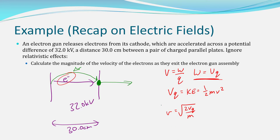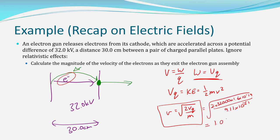This equation you'll see quite a bit when we talk about particle accelerators. When you substitute the values in, you should get 1.06 × 10⁸ metres per second. If you get a value over 3 × 10⁸ metres per second, you've made a mistake.